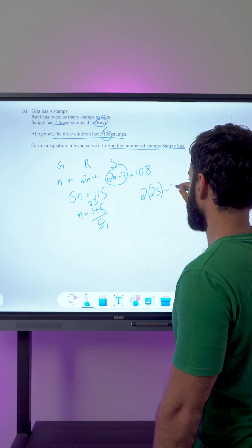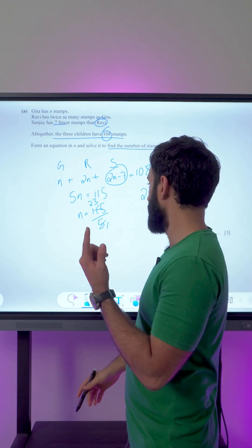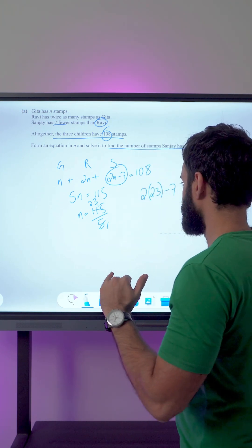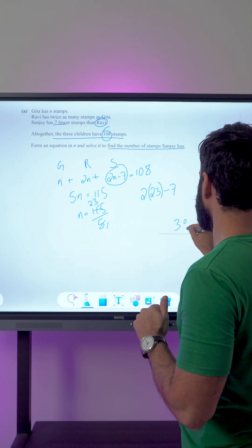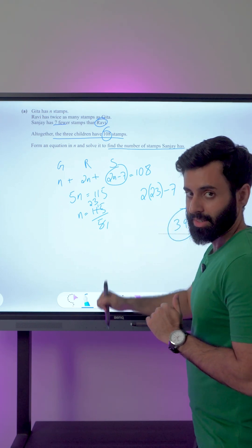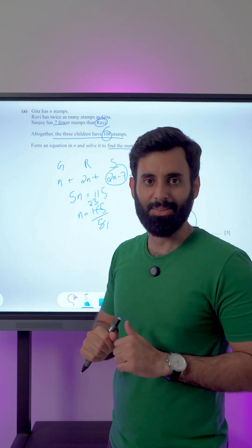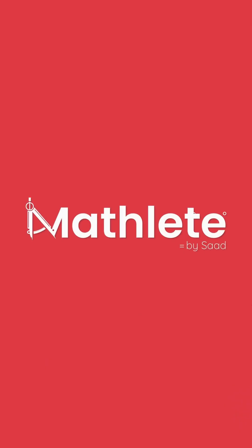And now that we know the value of n, we can find out the number of stamps Sanjay has. So 2 times 23, that is 46, 46 minus 7 is 39. And there you go, that is the correct answer. So if you got this correct, leave this emoji. And that's it for this one, I'll see you in the next one.